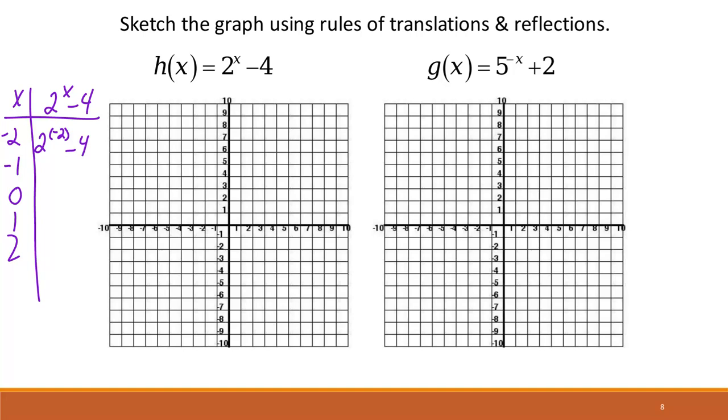So 2 to the power of negative 2 minus 4 will give us negative 3.75, right? And then you're just continuing that same process. So we get negative 3.5, negative 3, negative 2, and 0.